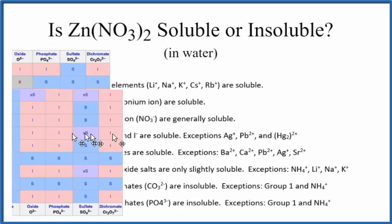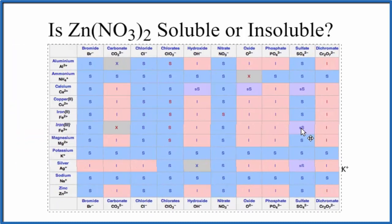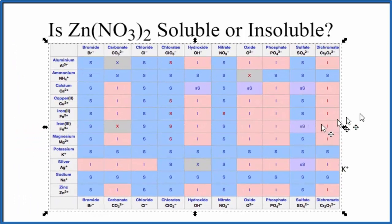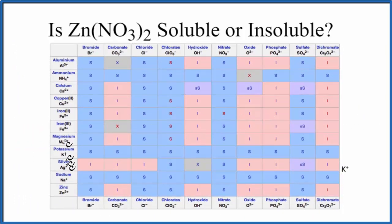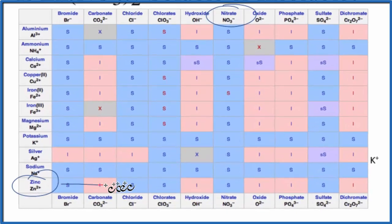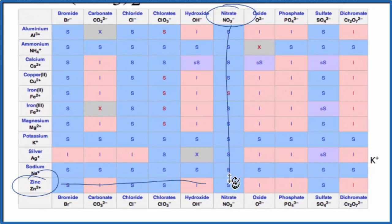We can also look at a solubility chart. So here's our solubility chart. We're looking for zinc right here at the bottom and nitrate right here, NO3-. We go over, and you can see all of these nitrates, they're soluble. We go down, here's zinc nitrate. That S means it's going to be soluble.